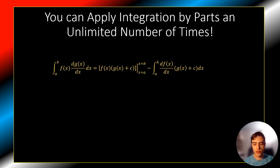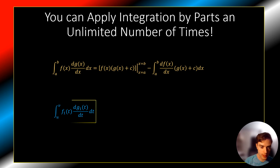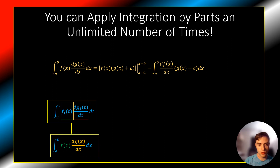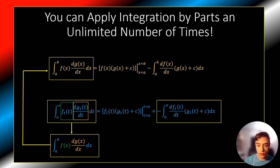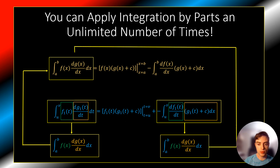You start with a general rule for integration by parts, and now you have a specific function that you want to expand using integration by parts. We can see that it follows the same form as the rule, so we can expand it. You'll notice that the term on the end can also be expanded because it follows the same general form. We can apply this an unlimited number of times because we're back to that same form — it's just nested. It doesn't matter which iteration you're on; you can still apply it whenever you want.